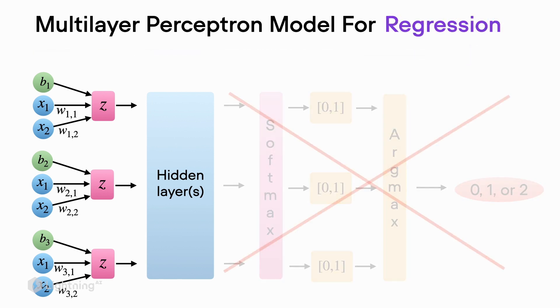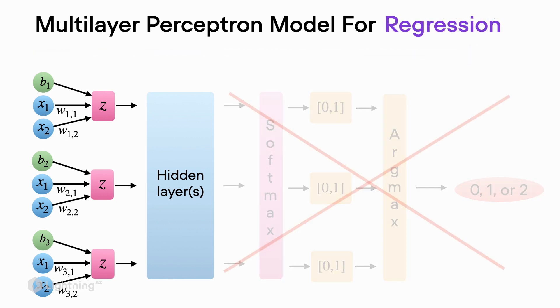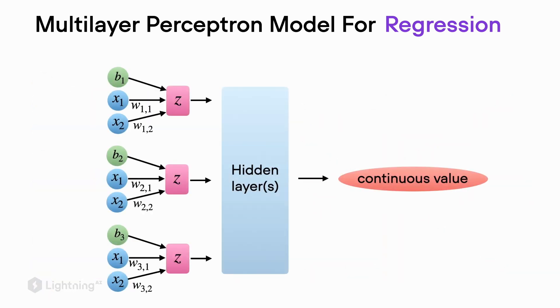Now the good news is, for regression the model is actually much simpler. We can get rid of the softmax activation and the argmax at the output layer because now we are not interested in class labels anymore, but continuous values. So instead of having the softmax and argmax in the output layer, we just need a continuous output.